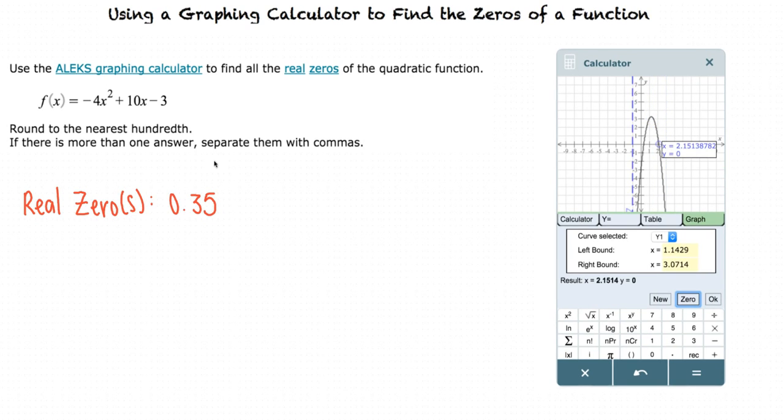The problem tells us to separate our answers with commas, so we write our answer as 0.35, 2.15.